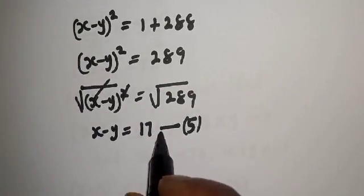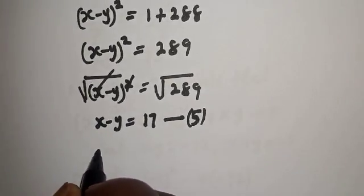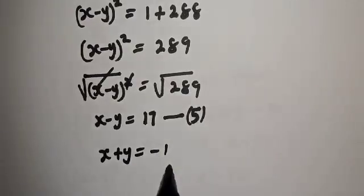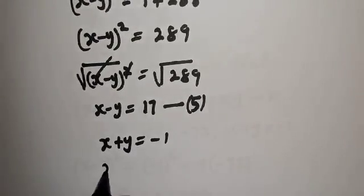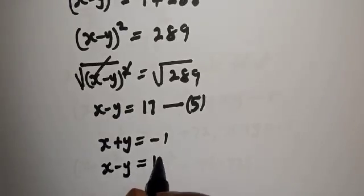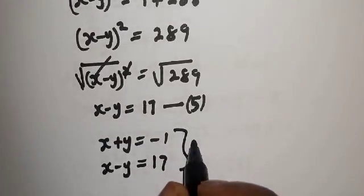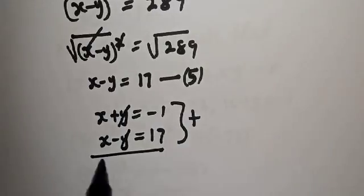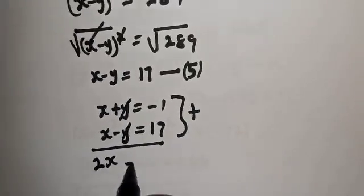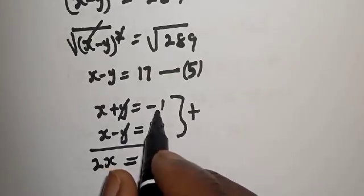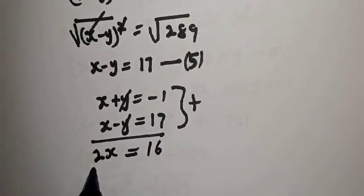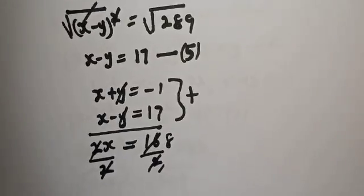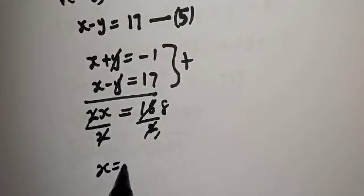Now we solve equations 3 and 5 simultaneously. Equation 3 is S plus Y equals minus 1, and equation 5 is S minus Y equals 17. Adding the two equations, the Y terms cancel, giving 2S equals minus 1 plus 17, which is 16. Dividing both sides by 2, S equals 8.